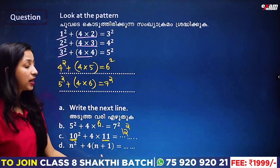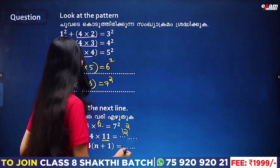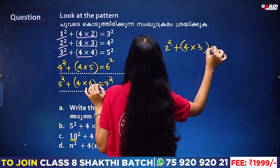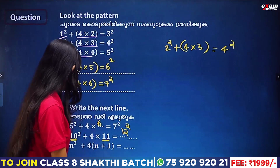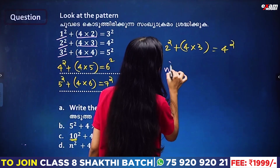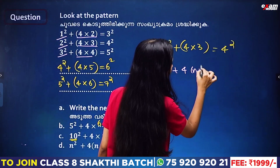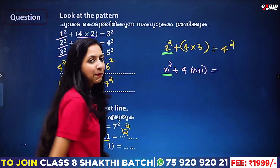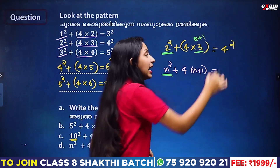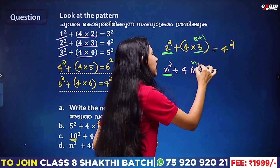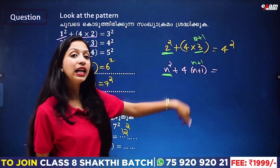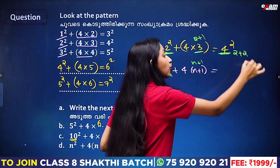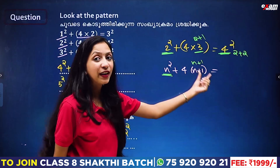The general formula is: n squared plus 4 into n plus 1 is equal to n plus 2 squared. For example, when n equals 2: 2 squared plus 4 into 3 equals 4 squared. Here, n maps to 2, n plus 1 maps to 3, and we multiply by 4. So n plus 2 gives the square on the right side.